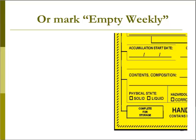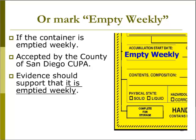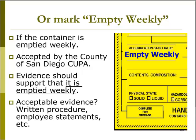If 'empty daily' is acceptable, what about 'empty weekly'? The San Diego County CUPA has decided to accept 'empty weekly' in the accumulation start date spot on the hazardous waste label if the container is indeed emptied every week that it accumulates and stores waste. There should be evidence to support the claim — acceptable evidence includes a written procedure for weekly waste removal or employee statements. Weekly means every seven days, so one good idea would be to have a schedule for removing waste from each marked container on the same day every week.